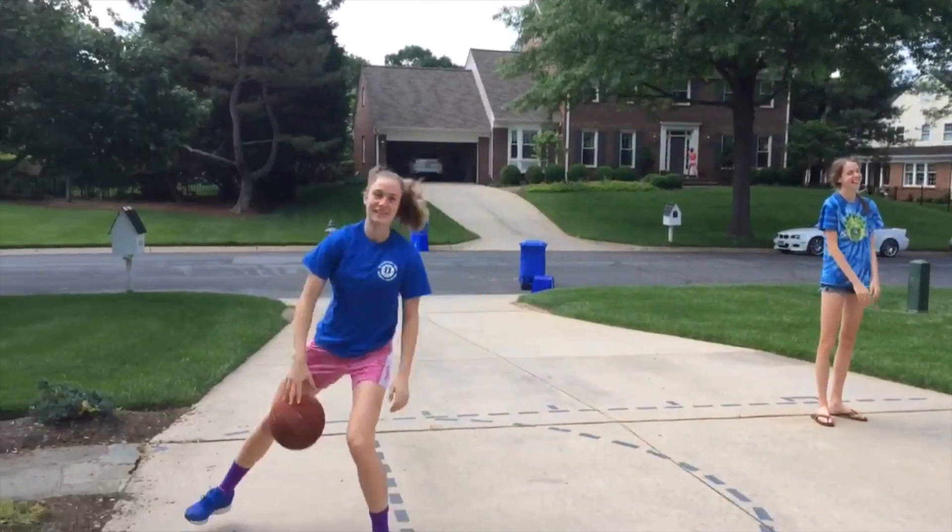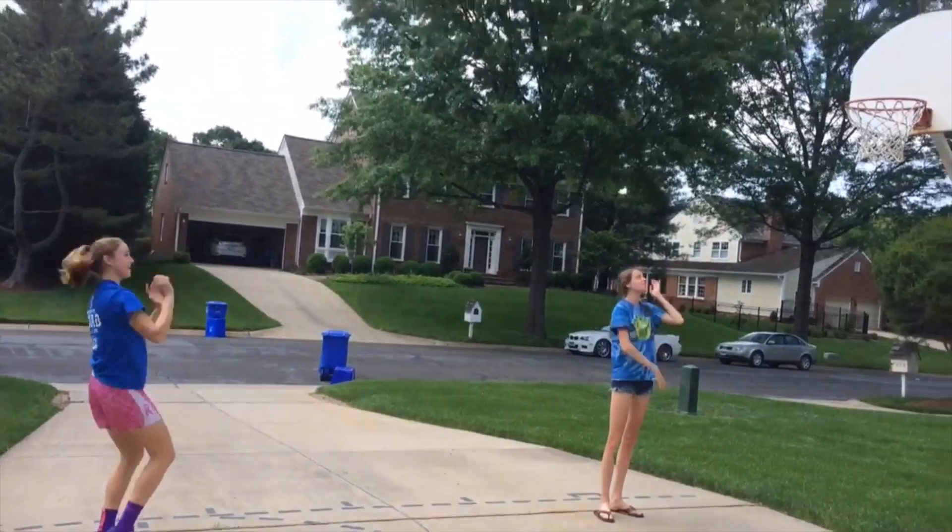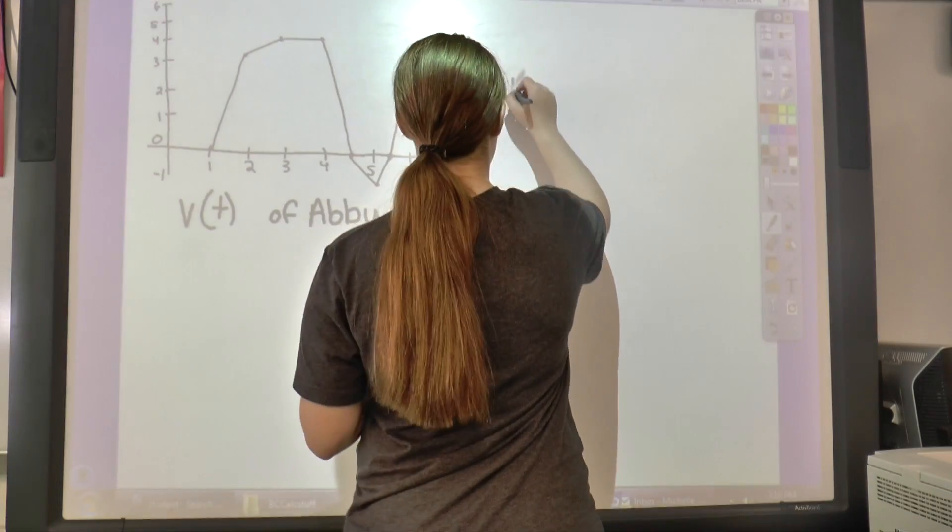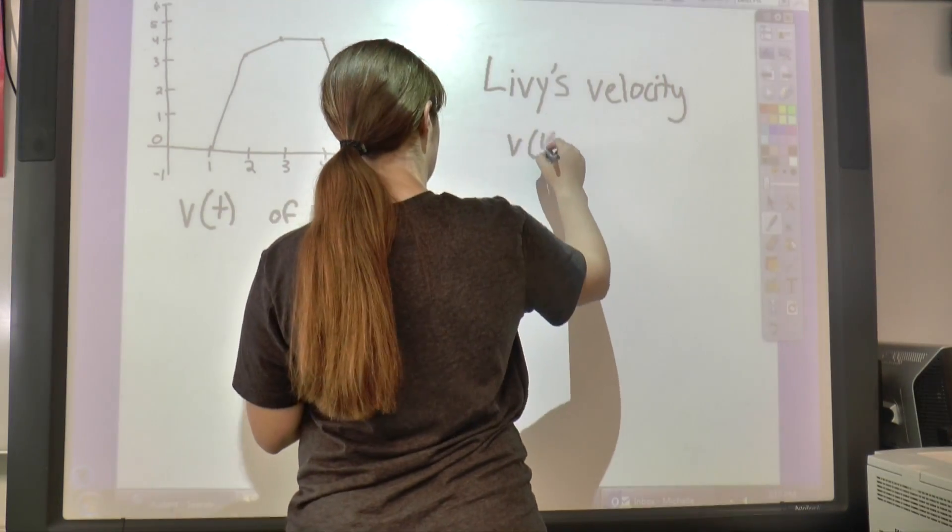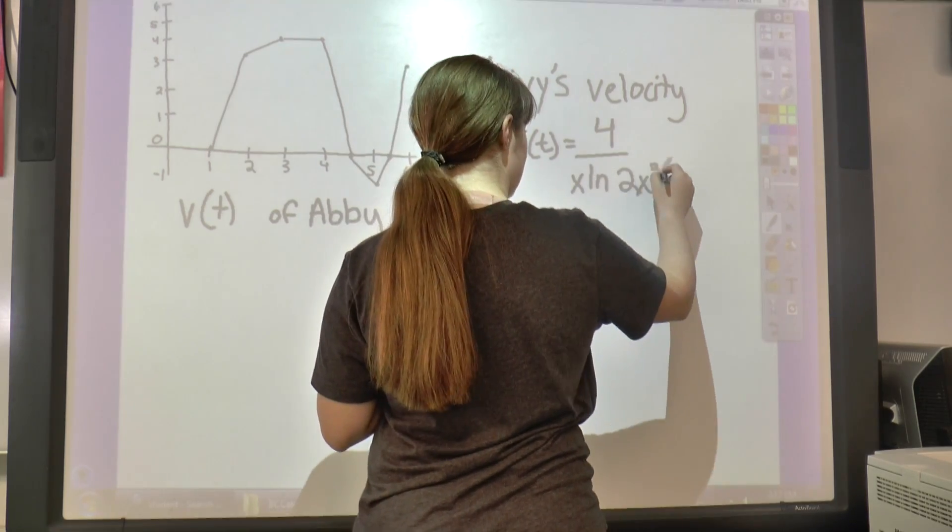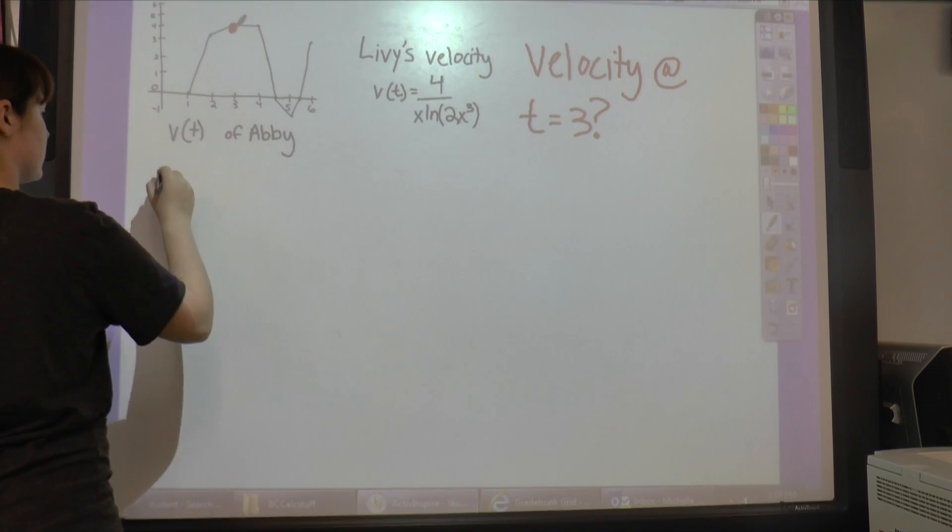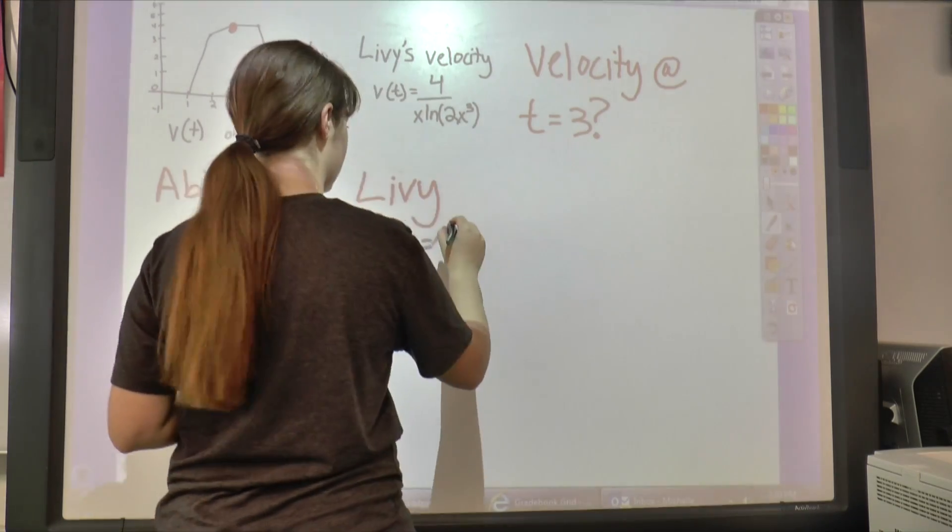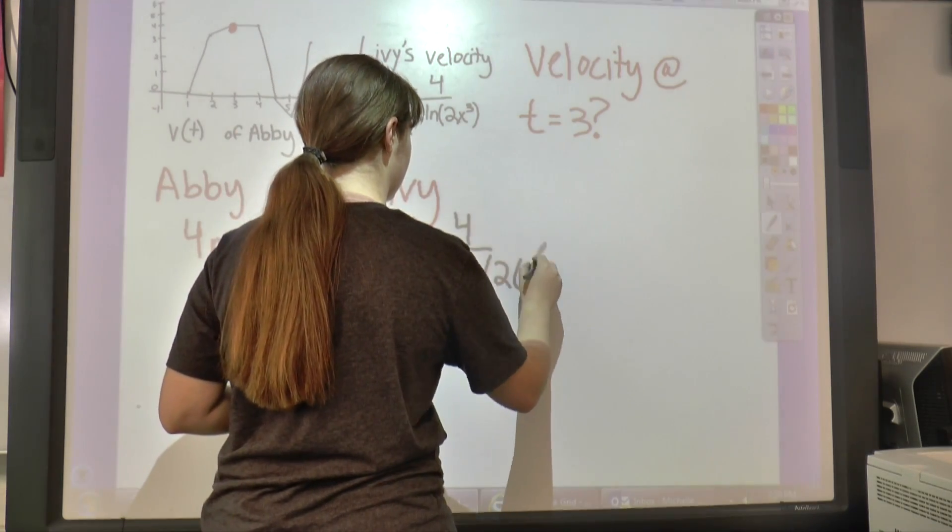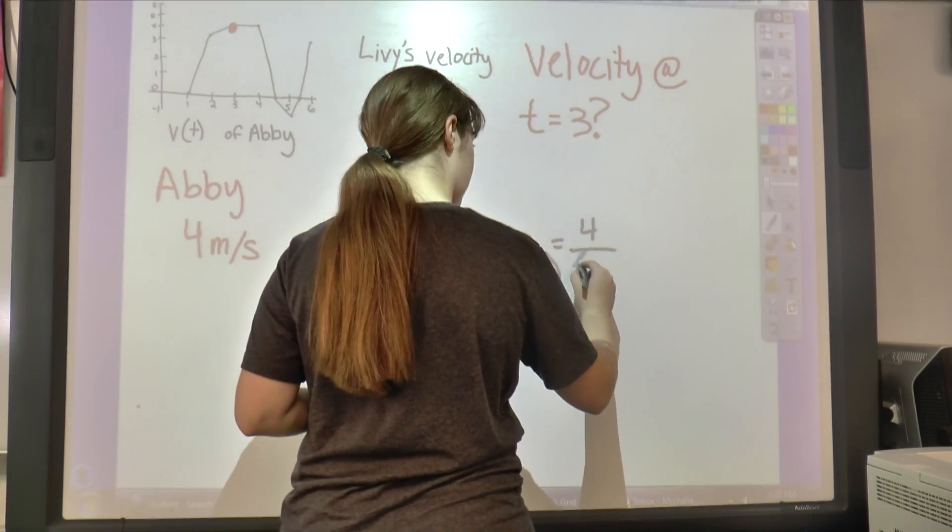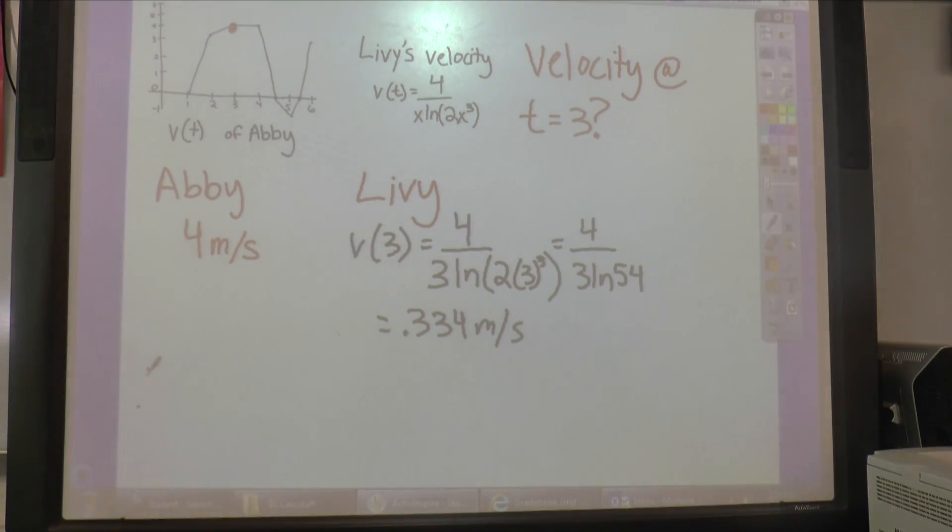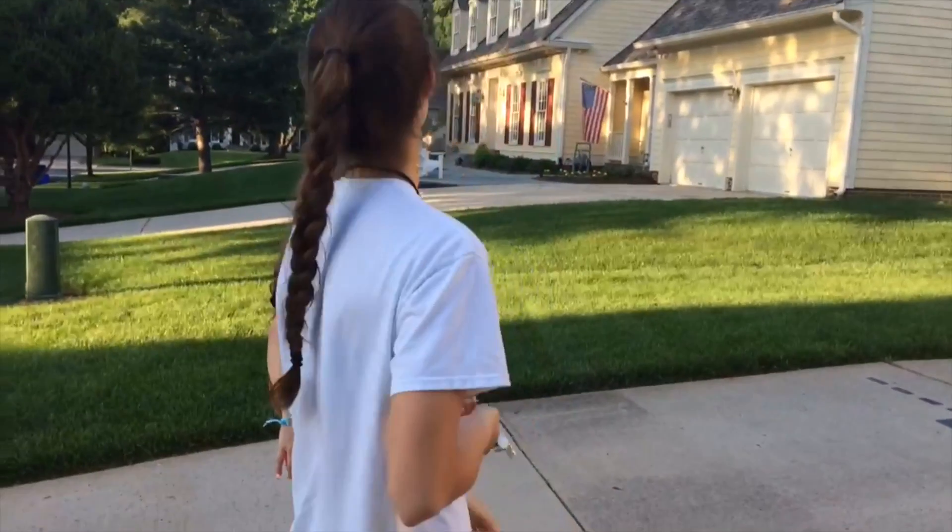I watched Whitman basketball players, Abby and Olivia Myers, and recorded some information about their velocities while they were playing a game of friendly pickup. Abby's velocity can be represented by the graph shown here. Olivia's can be represented by the function f divided by x ln of 2x to the third. I want to know their velocities at t equals 3. To find Abby's velocity, I just look at the y value of the graph at t equals 3. I get that Abby's velocity is 4 meters per second. To find Livy's, I need to plug in 3 to her given velocity equation. I then get that Livy's velocity at t equals 3 is 0.334 meters per second. Livy is going slower, so I need to make a substitution. Oh, no! Pass the ball! You saw it!